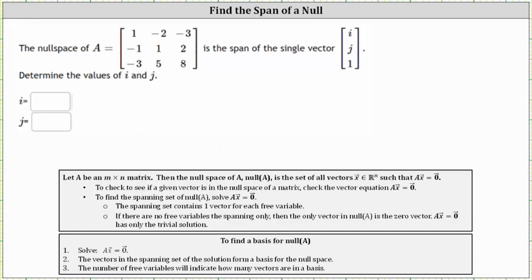The null space of matrix A is the span of a single vector with components i, j, and one. We're asked to find the values of i and j.